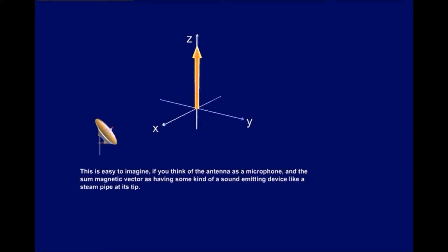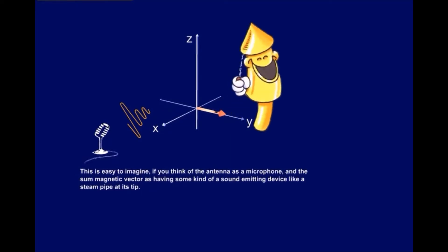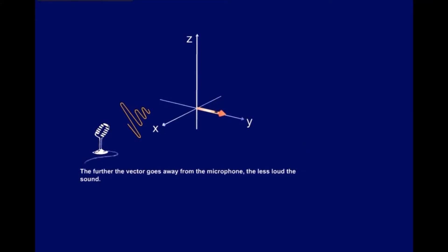This is easy to imagine, if you think of the antenna as a microphone, and the sum magnetic vector as having some kind of a sound emitting device, like a steam pipe at its tip. The further the vector goes away from the microphone, the less loud the sound.